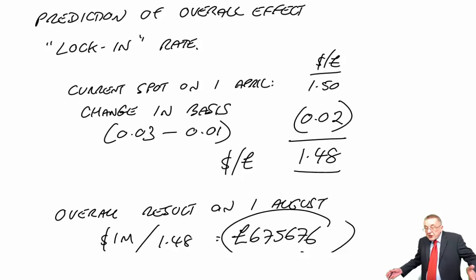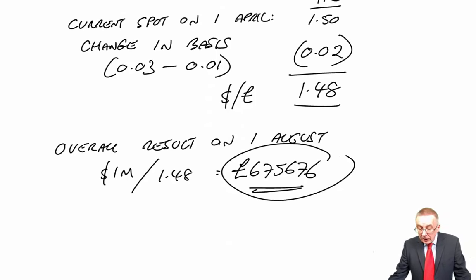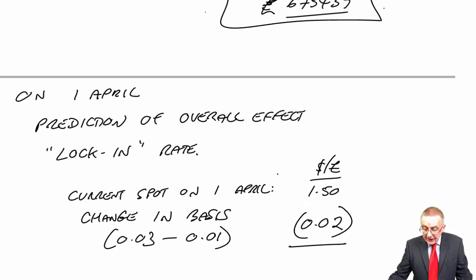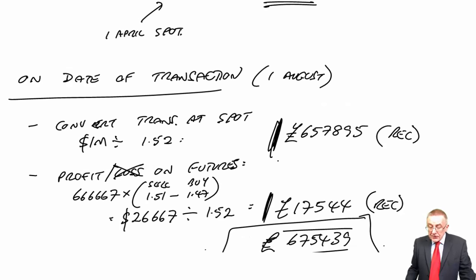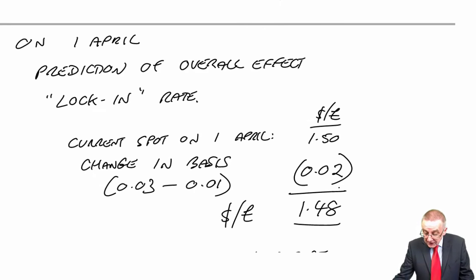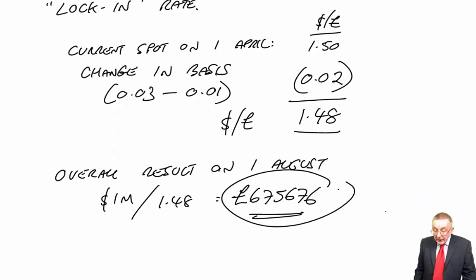Which I don't think is exactly what we had earlier, but you're going to have to trust me, the difference there is simply rounding and irrelevant. But we can predict from the very beginning what the net effect is going to be. And you see it doesn't matter what spot is. You could do all that, everything we did there again, assuming the spot on 1st of August was 1.58. The futures price would be something else, you'd come to the same net result, give or take a bit of rounding. It doesn't matter what happens to the spot rate. The net effect of using futures will be as though we were converting at 1.48.